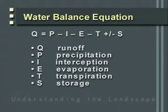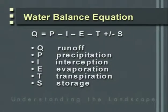We'll look at the hydrologic cycle in a simple mass balance equation. Q, symbolically representing streamflow, is equal to precipitation minus interception, minus evaporation, minus transpiration, plus or minus the change in storage — mostly in groundwater conditions. Let's look at each of these individual components.